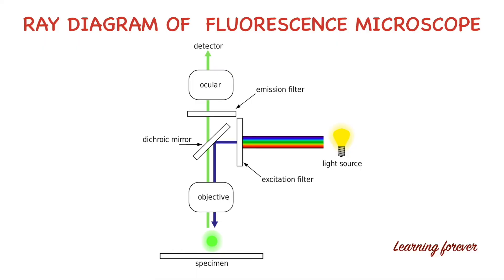Now let's look at the ray diagram of the fluorescence microscope. We need a light source. Then there is the excitation filter, also called the primary filter. This is followed by the dichromic mirror and the emission filter. To keep the specimen, we use the stage. There are two lenses: the objective lens and the ocular lens. You can view the fluorescence image by eye, or if you want to measure fluorescence light intensity, you can use a specific detector. These are the different components of the fluorescence microscope.